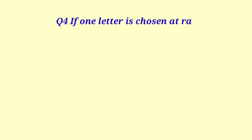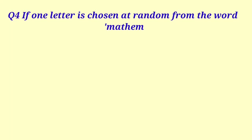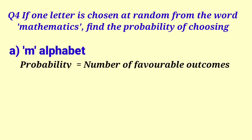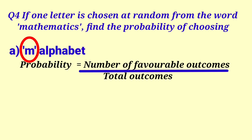Let's begin question number 4. If one letter is chosen at random from the word mathematics, find the probability of choosing M alphabet. Formula for probability is number of favorable outcomes upon total outcomes. We want M alphabet and it is repeating 2 times. So favorable outcomes is 2. Total outcomes, let's see how many letters are there. Total 11 letters are there. So answer is 2 by 11.